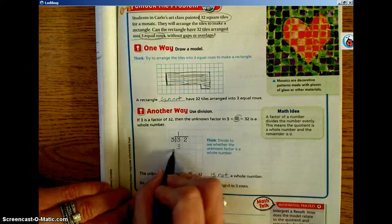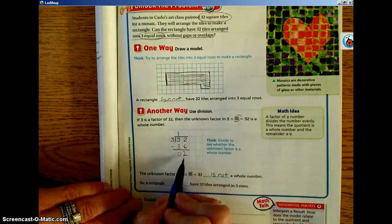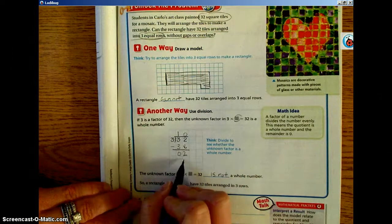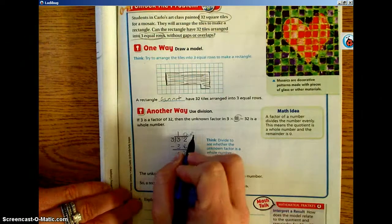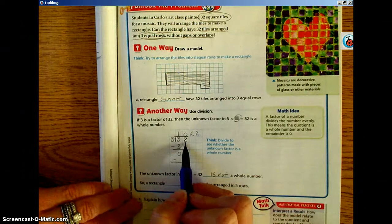3 times 1 is 3. Subtract, we bring down our 2. 3 will not go into 2, so this is going to be a 0. 0 times 3 is 0. 2 minus 0 is 2, so we have 10 remainder 2. 3 will not go into 32 equally.